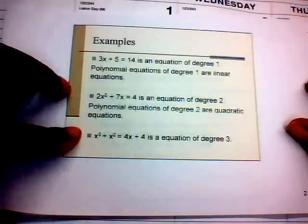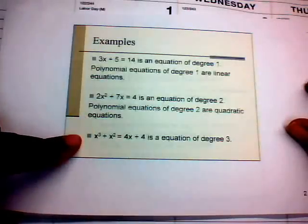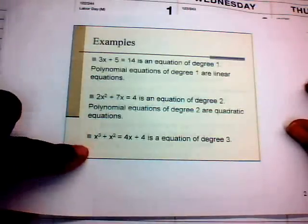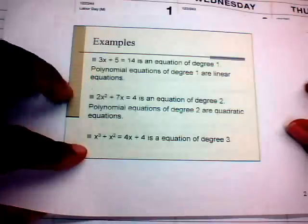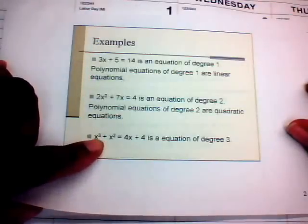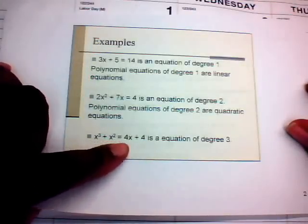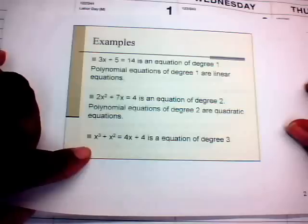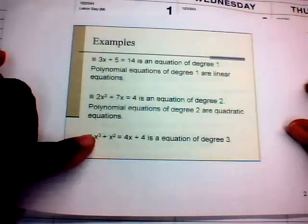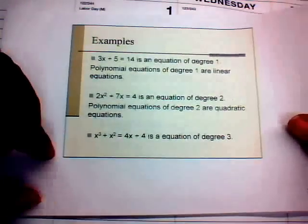The next example is a polynomial equation of degree 3 because the highest exponent is 3. This is x³ + x² = 4x + 4 — an equation of degree 3.